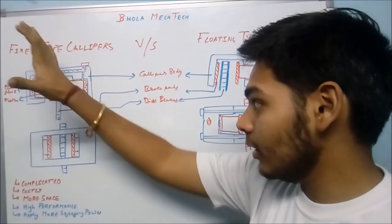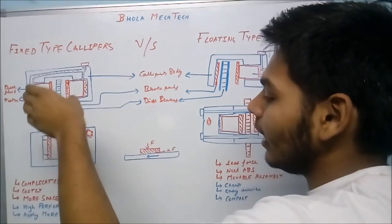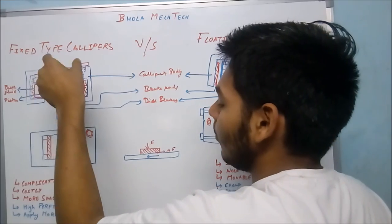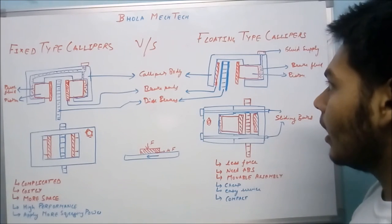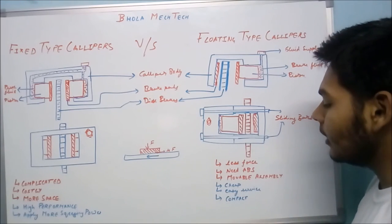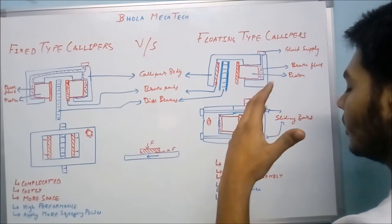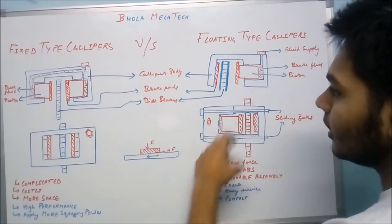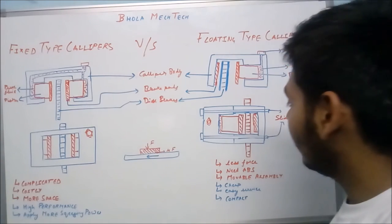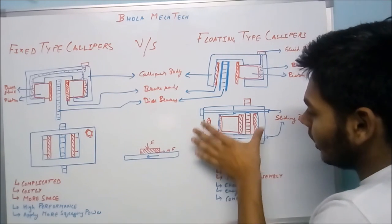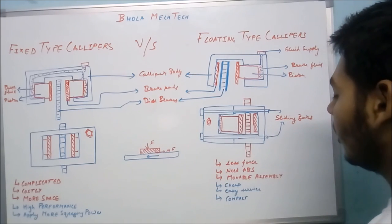Coming to the advantages: the fixed type caliper is high performance because both pistons are actuating, applying more squeezing power, making it more efficient. The floating type caliper is cheaper because it does not require higher manufacturing costs. It is also easier to service — taking out one piston is simpler than taking out two — and it has a compact structure due to its smaller size.